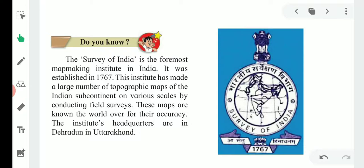Do you know? The Survey of India is the foremost map making institute in India. It was established in 1767. This institution has made a large number of topographic maps of the Indian subcontinent on various scales by conducting field surveys. These maps are known the world over for their accuracy. This institute's headquarters are in Dehradun in Uttarakhand.